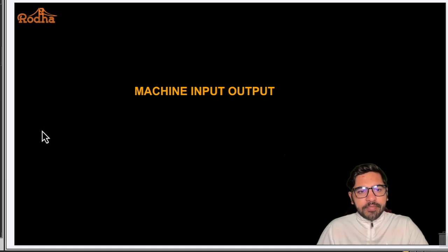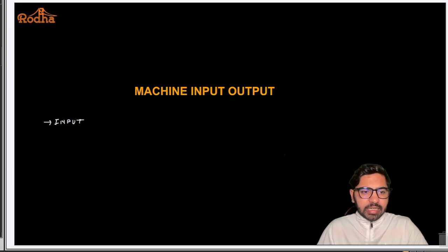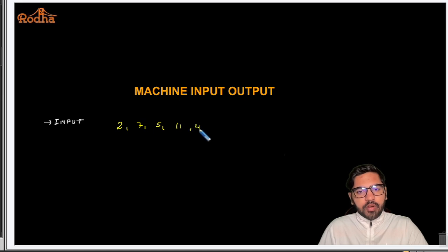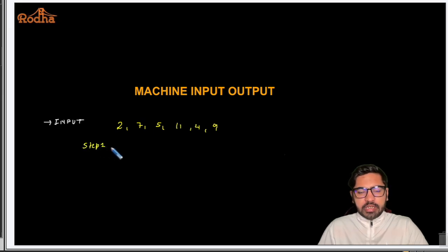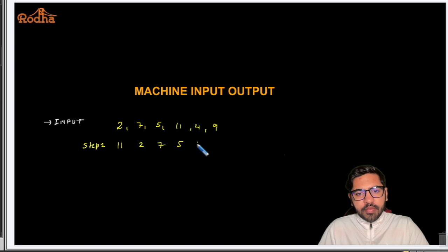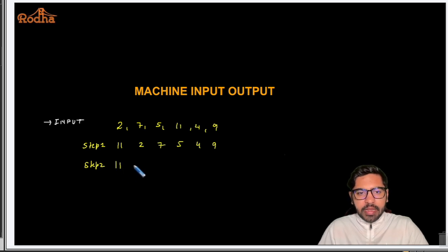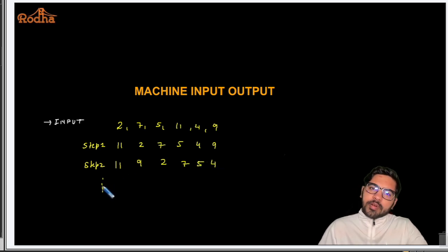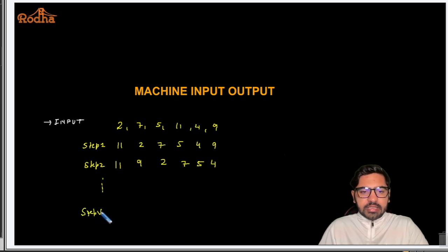In machine input-output, you will be given an input. For example, let's take some numbers: two, seven, five, eleven, four, and nine. Then it will give you step one of the machine. Step one will look like: eleven, two, seven, five, four, and nine. Step two will look like: eleven, nine, two, seven, five, and four. And so on — certain steps would have been given.